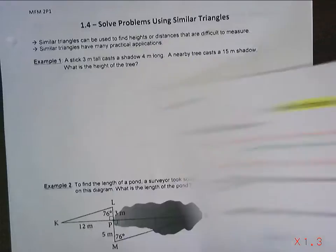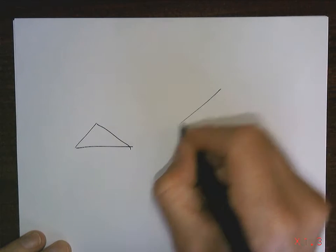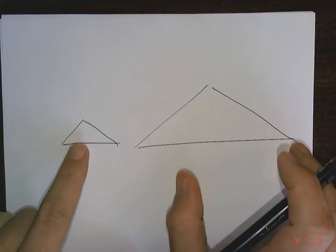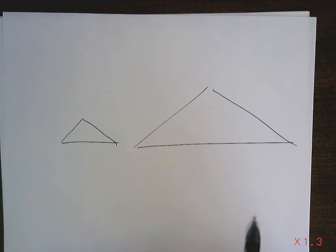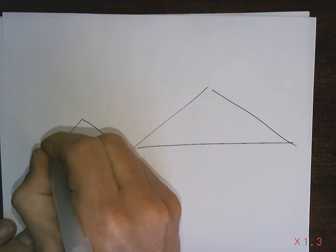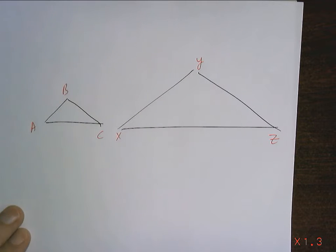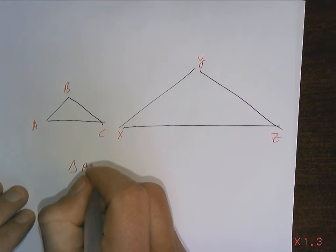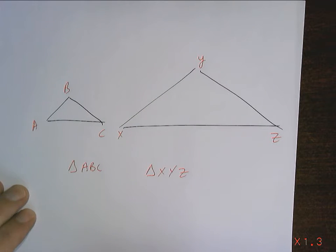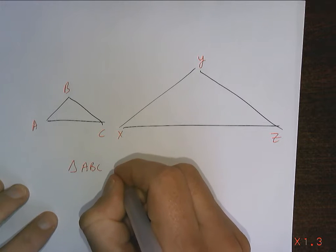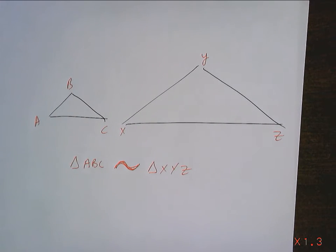Let me show you on paper what I'm talking about. If I had a triangle here, and a bigger triangle, and they were the same shape but one is much bigger than the other — we would call these similar triangles. If this was triangle ABC and this was triangle XYZ, and I wanted to say they were similar, I'd use a special symbol that means 'similar.' You'll need to get used to this new sign.